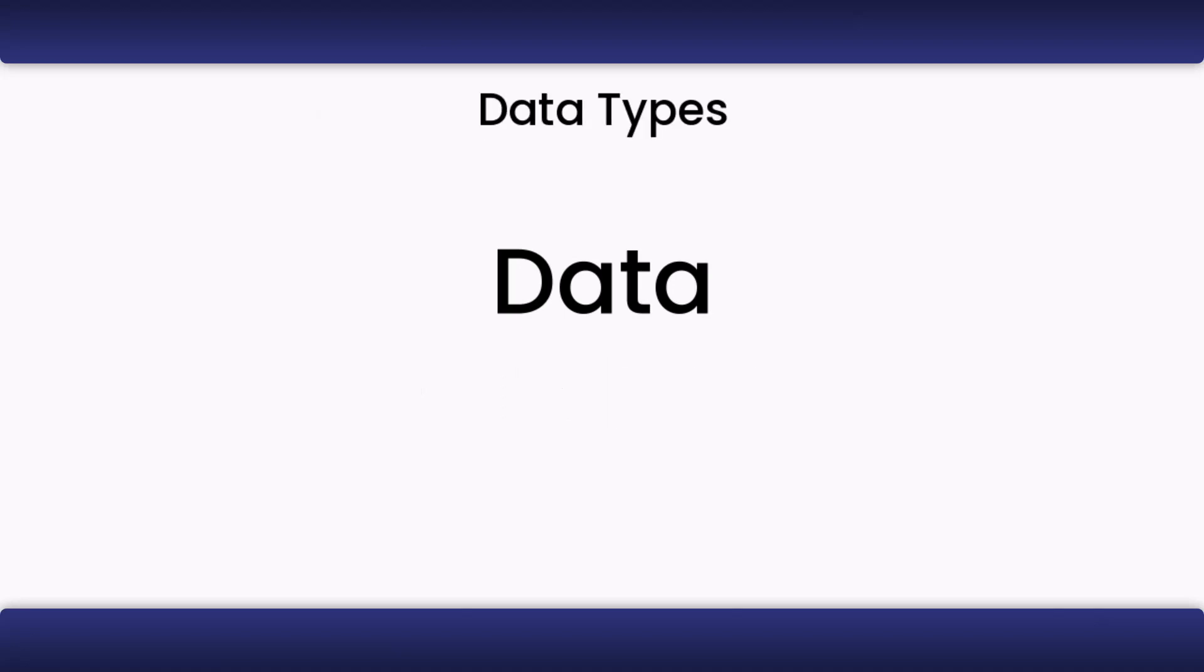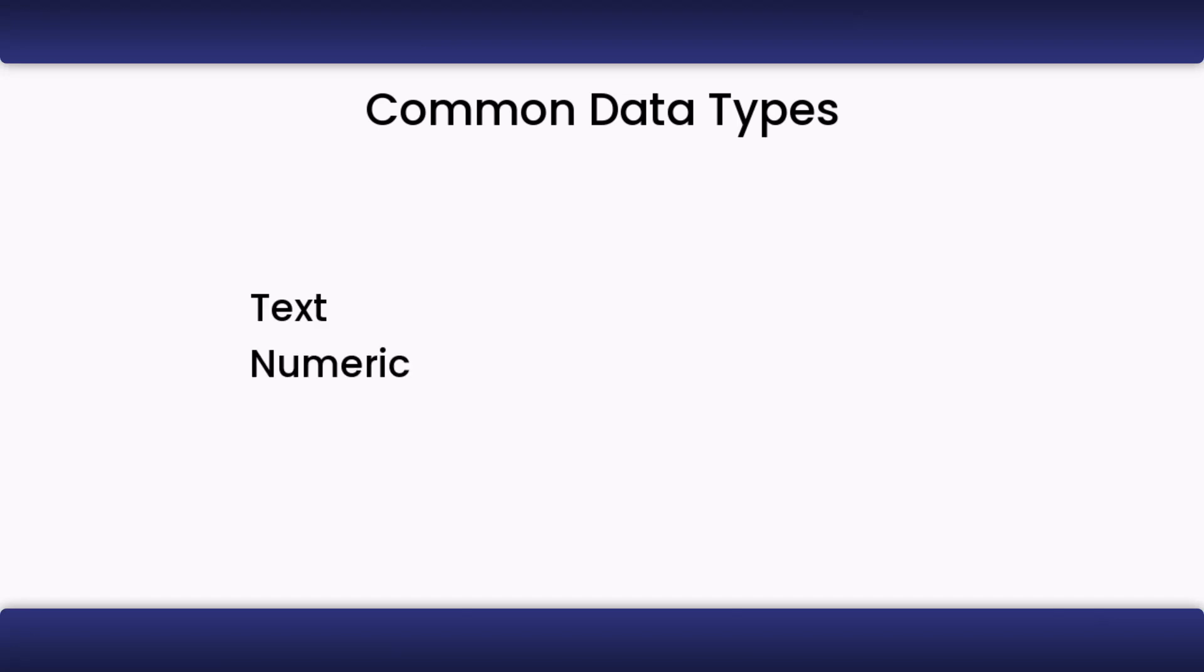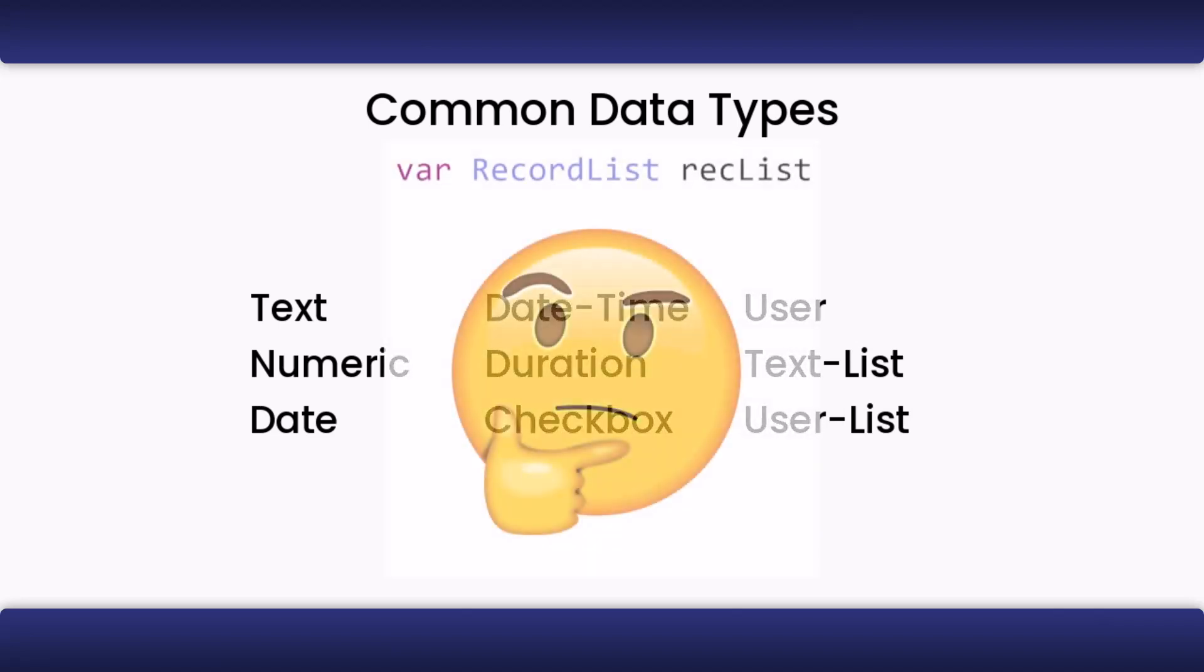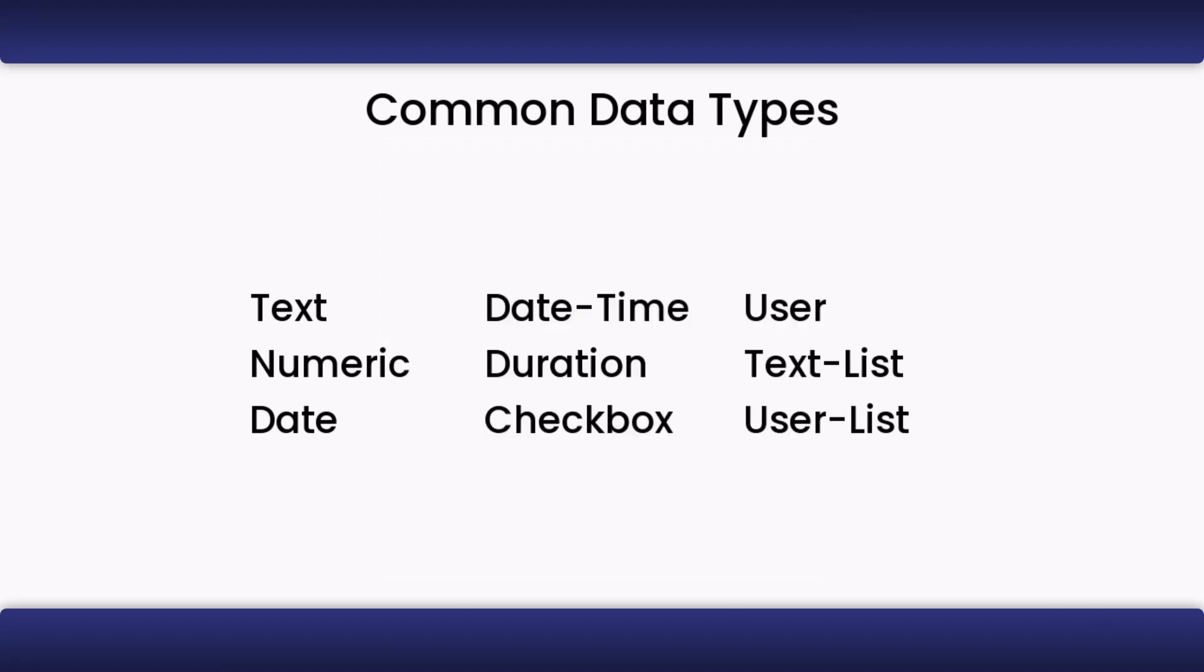Data is arguably the most crucial part of a formula, as it allows us to transform data from other fields into something else. There are different types of data. Mostly, these types are reflected with field types. The common types are text, numeric, date, datetime, duration, checkbox, user, textlist, and userlist. There are more types than just these, but these are the most commonly used types.